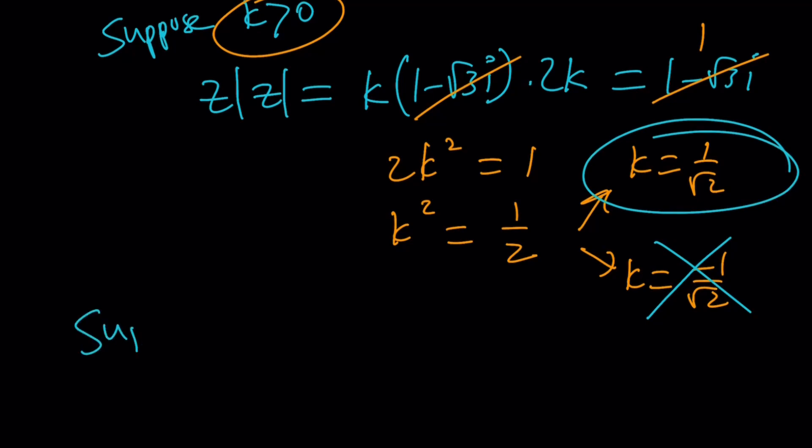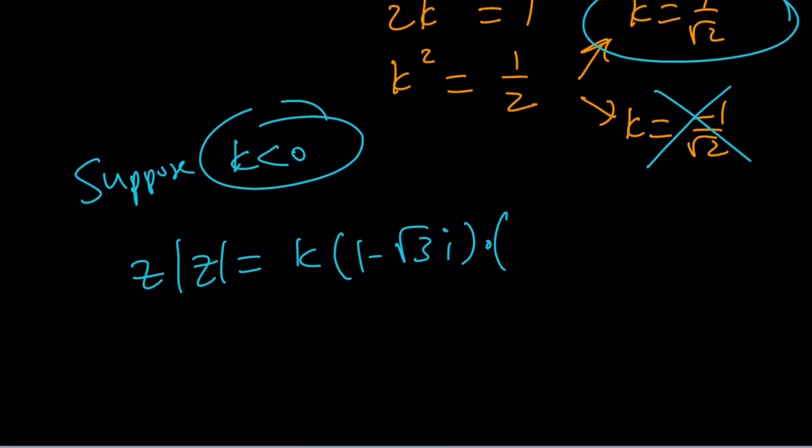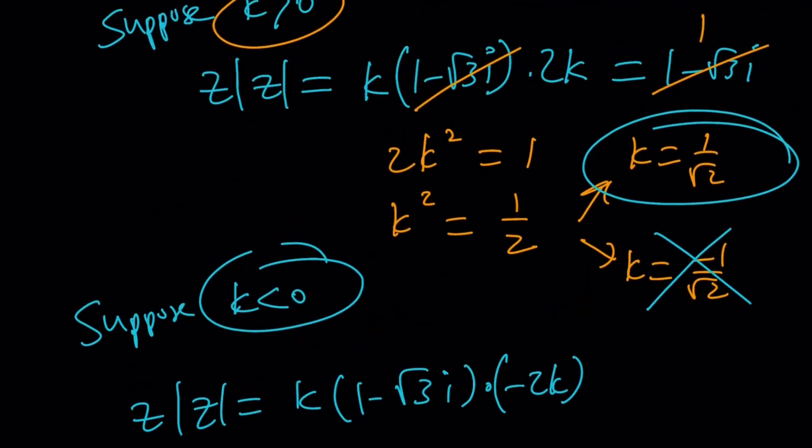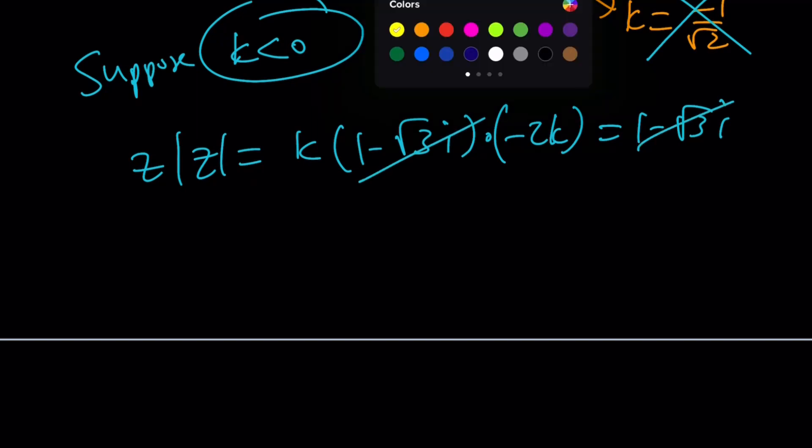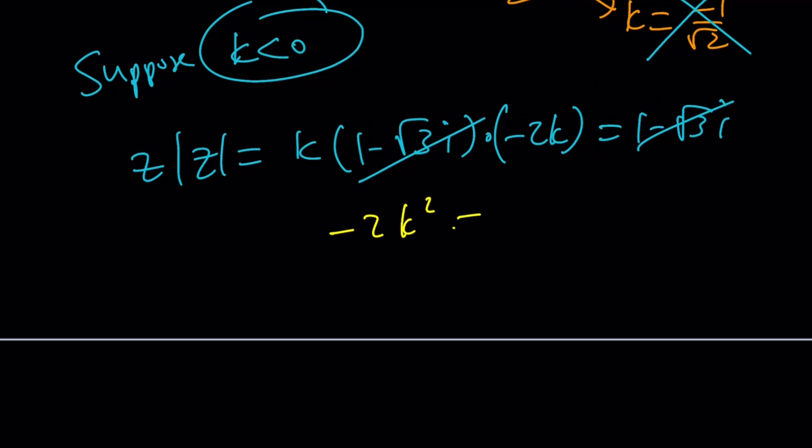Now, suppose k is less than 0. What happens if k is negative, right? Well, in this case, we have to use the same thing for z. Of course, z is not going to change. But the absolute value, remember, is going to be negative 2k. So, then we're going to set it equal to z times absolute value of z, which is this. These two are still going to cancel out. But we're going to end up with a different equation: negative 2k squared equals 1. Does that look familiar? k squared is equal to negative 1 half. Uh-oh. k is a real number. You don't want that for sure. So, second branch is not going to give us any solutions, unfortunately. Make sense? Okay. So, there's only one solution then.